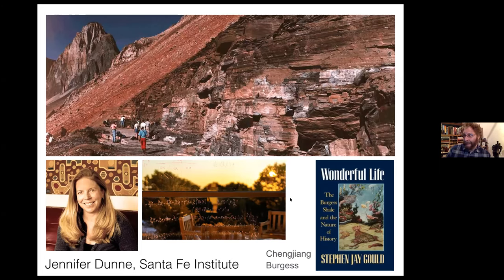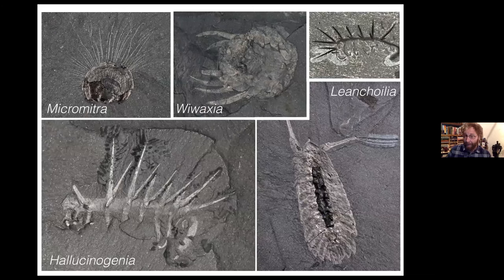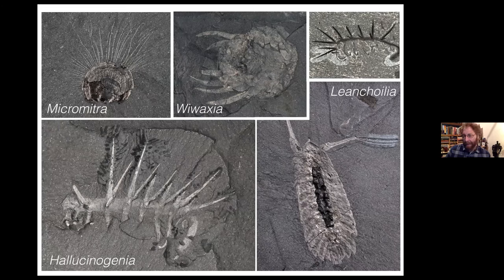To get a sense of the scale of this question, we have to understand how alien these systems were. These are half a billion years old, and they are very well-preserved. Looking at some of these species: Micromitra looks kind of like a today's urchin; Wiwaxia is somewhat urchin-like; Hallucigenia — just the name illustrates how strange they are. We don't even know which was up or down, though they have a better sense of that now. The Burgess Shale was a shallow marine system.